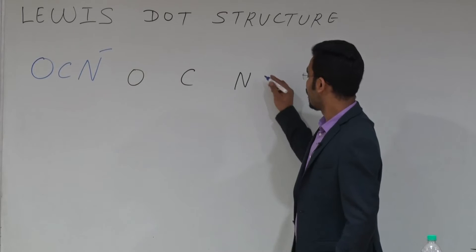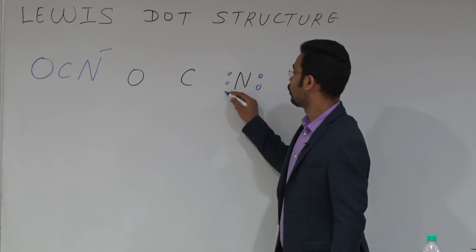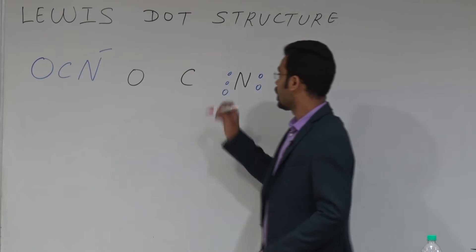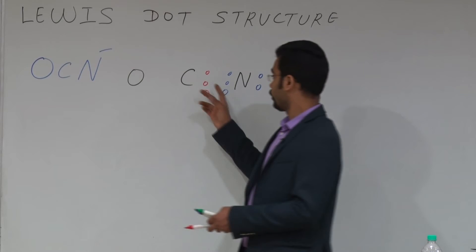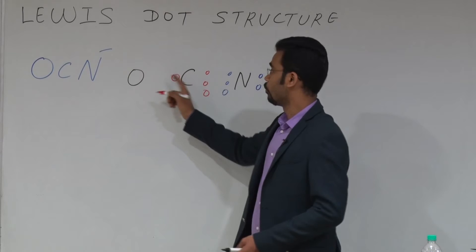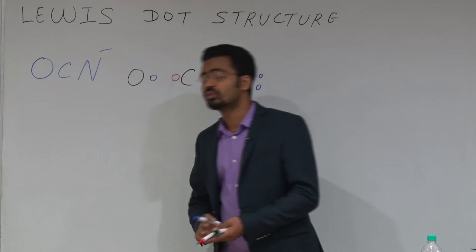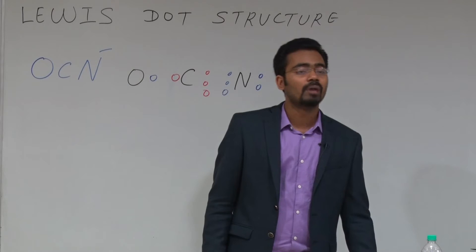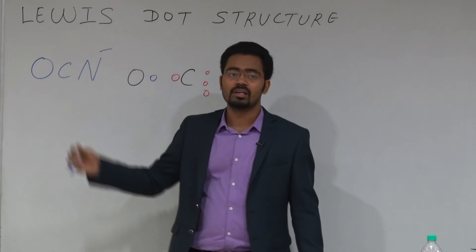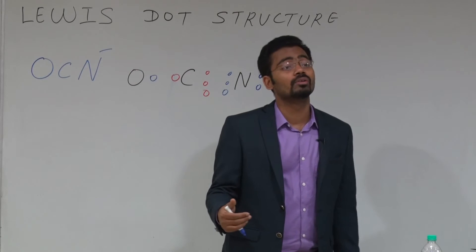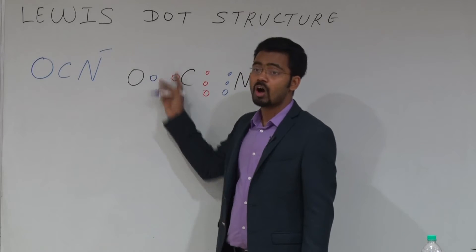You have to show the electrons of nitrogen: two electrons will be as a lone pair and three electrons will form a bond with carbon. One electron will form a bond with oxygen. Now, oxygen has six valence electrons, and there is a negative charge, meaning gain of one electron. So oxygen has seven valence electrons total. One electron forms a bond, leaving six remaining electrons.